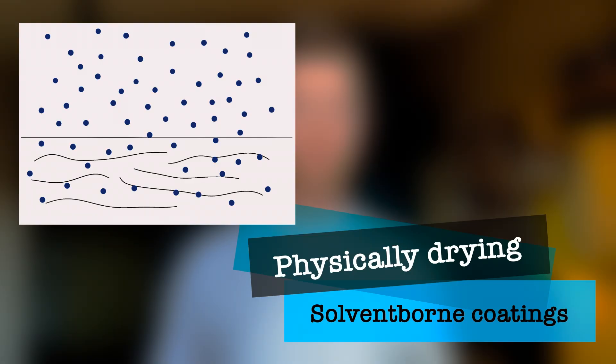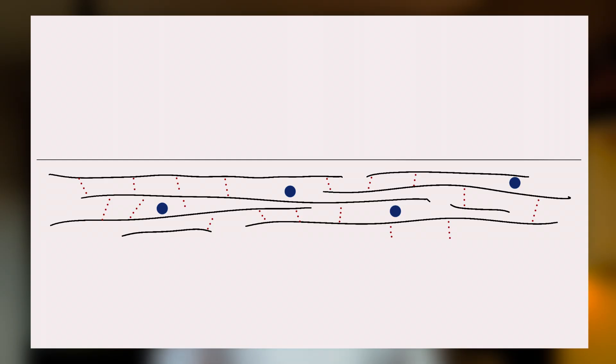Let's look at physically drying paints first — those where only solvent evaporates and no chemical reaction takes place. Common solvents include butyl acetate, xylene, isopropanol, acetone, and many more. As the solvent evaporates, the other coating components like resin, pigments, and fillers are left behind. At some point, the resin molecules come so close together that they hold on to each other with physical attraction forces — so-called cohesion forces — forming a strong, coherent film.